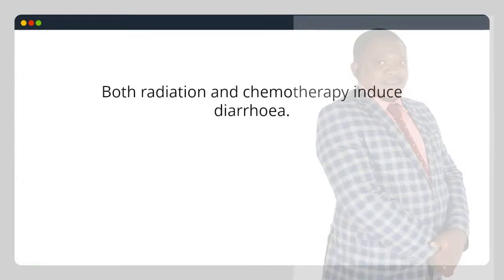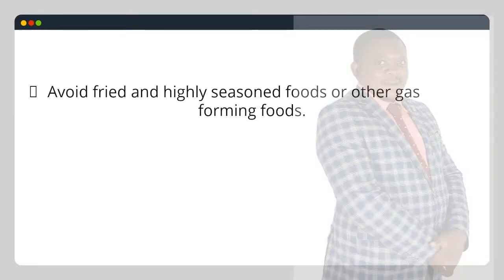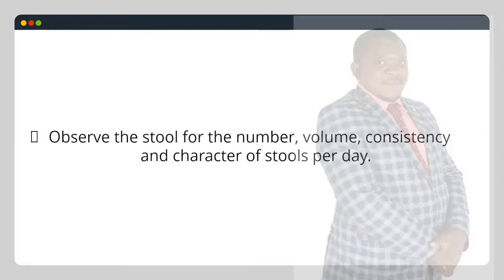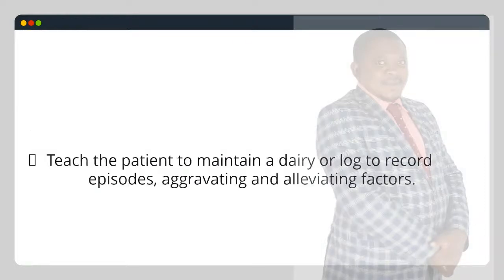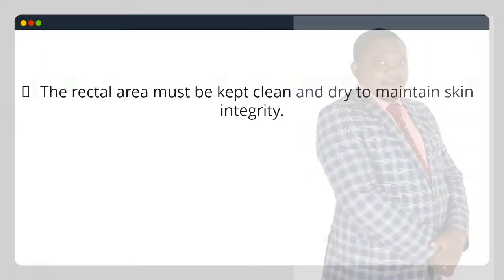For both radiation and chemotherapy-induced diarrhea: a diet low in fiber and residue but high in protein should be recommended prior to treatment. Avoid fried and highly seasoned foods or other gas-forming foods. Fluid intake and electrolyte supplementation are recommended such as half-strength Darrow's solution or Ringer's lactate or dextrose saline at 3 liters in 24 hours. Observe the stool for number, volume, consistency and character per day. Teach the patient to maintain a diary or log to record episodes and aggravating/alleviating factors. Lukewarm sitz baths may alleviate discomfort and cleanse the rectal area if significant rectal irritation occurs. The rectal area must be kept clean and dry to maintain skin integrity.